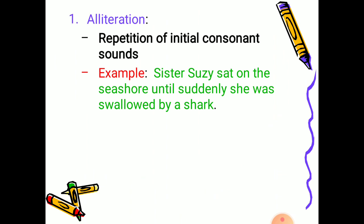Nursery rhymes and tongue twisters are the best examples of alliteration. I am going to read one example which is cited for you here: 'Sister Susie sat on the sea's shore until suddenly she was swallowed by a shark.'